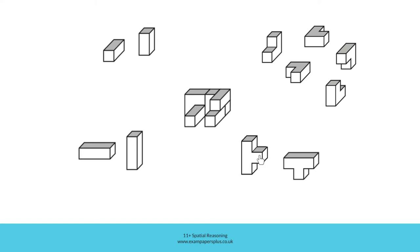Look at this T-shaped block and see if you can identify where that could be in the figure. The T-shape could be positioned so that the longer section was towards this part of the figure, with the shorter section pointing upwards like this. That would mean that this would be a cuboid, directly in front of this part of the T-shape.